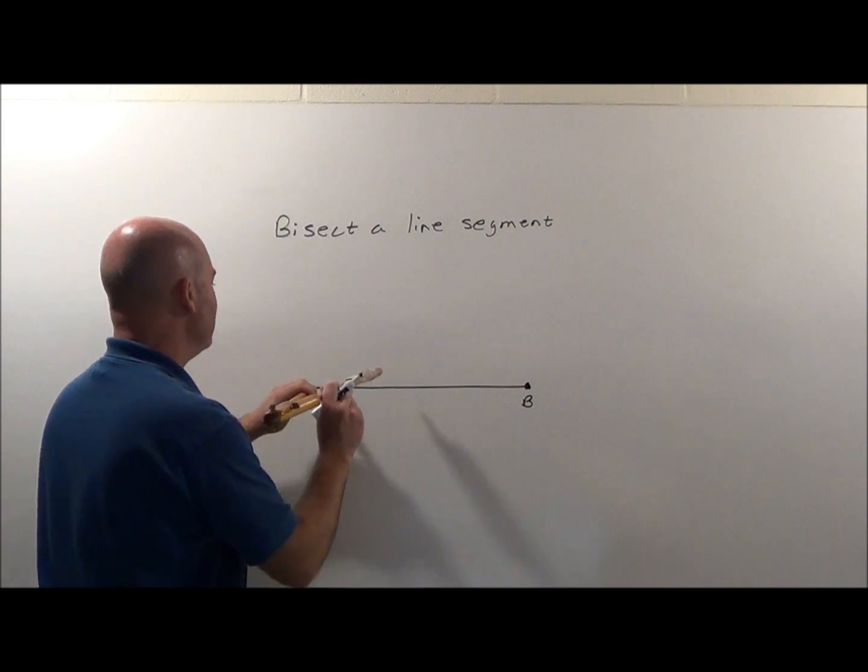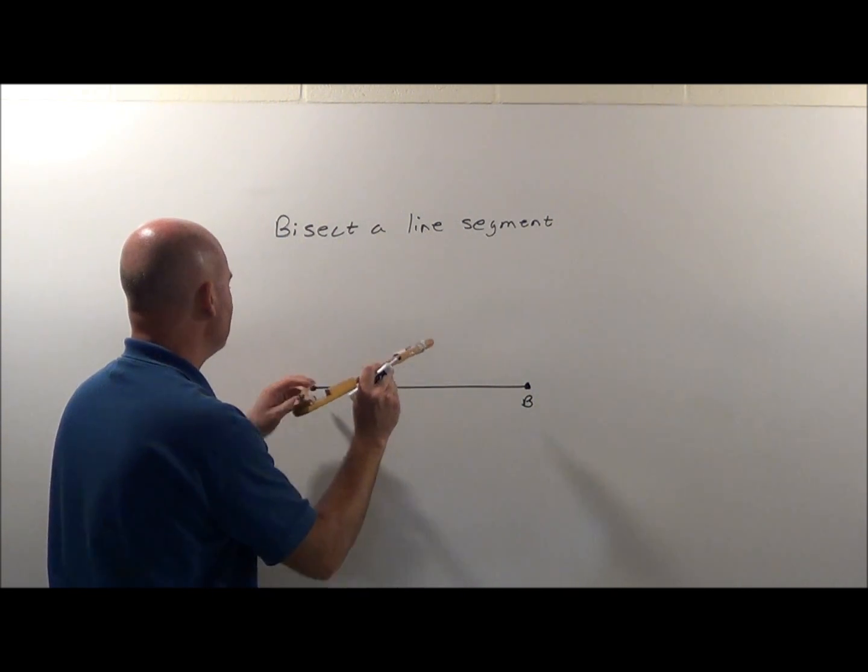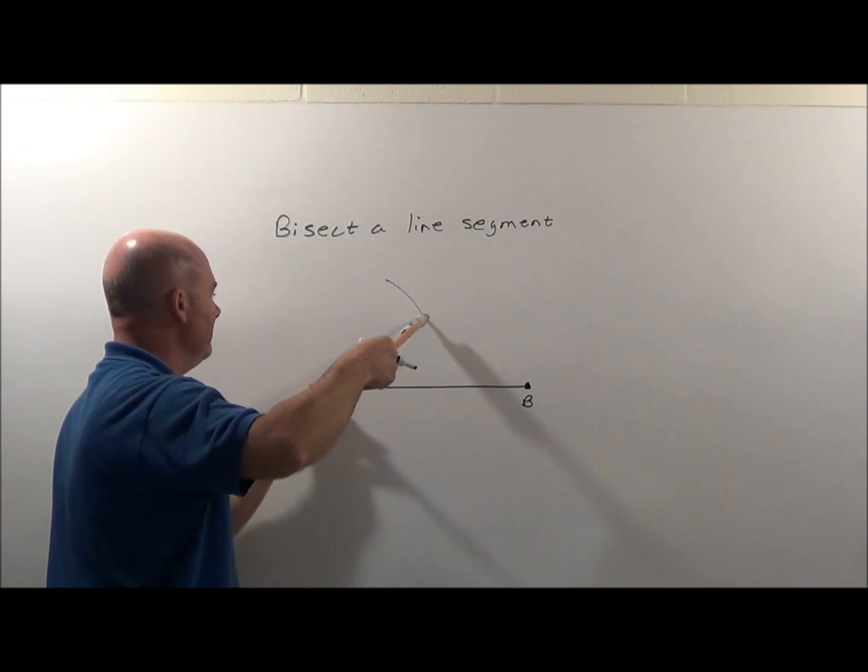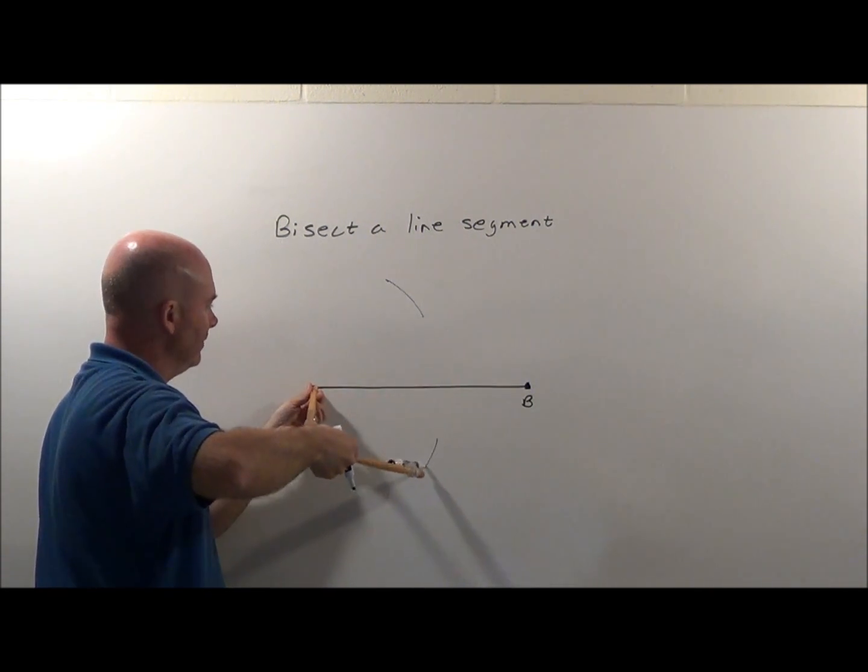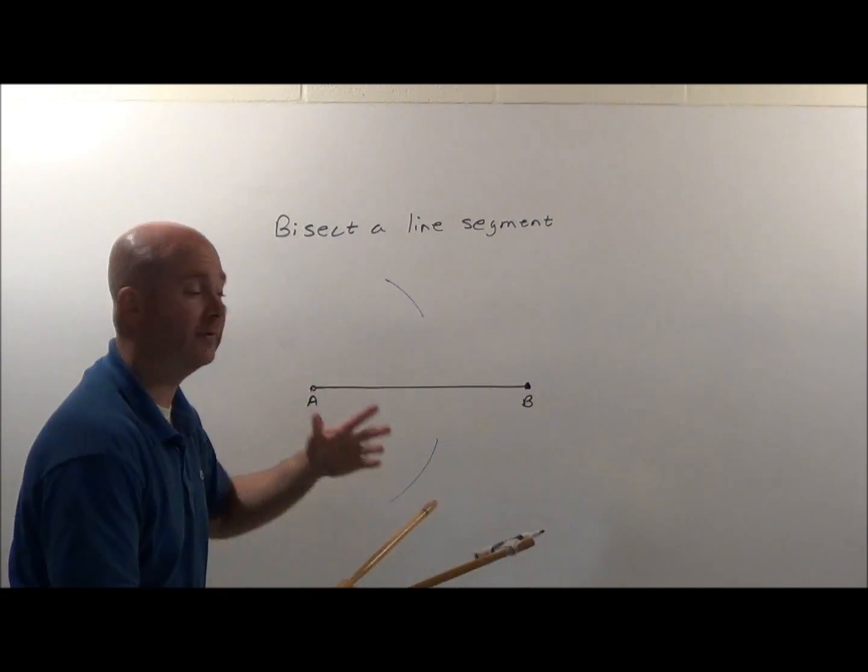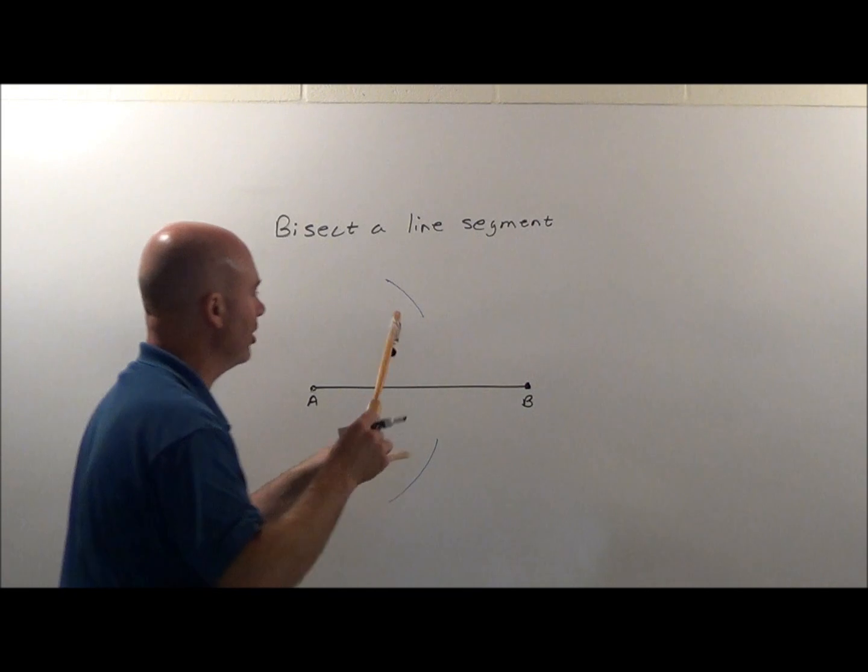Now to do this, I want to make sure I extend it beyond halfway, and all I'm going to do is I'm going to put it here on A and make a marking. Bring it down here, finish my marking, and again you could make one full big circle if you wanted, but I just need a marking there, a little marking there.